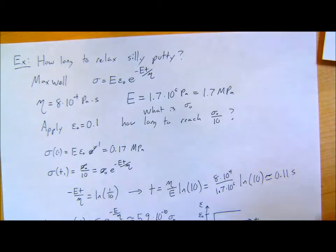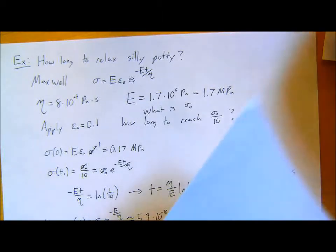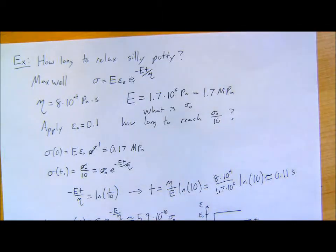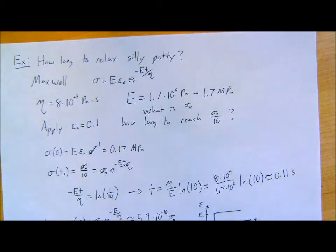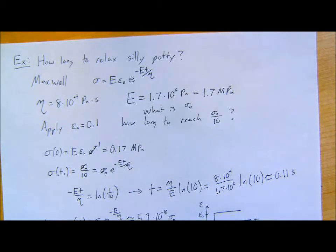Maxwell is good for silly putty and molten glass. What cases would the Kelvin-Voigt apply? I'm not entirely sure — I couldn't find good examples where it came up practically. Basically you'd have something with almost infinite initial stiffness that then creeps very slowly, which is a bit unusual. I couldn't find a good engineering example where it actually comes in.